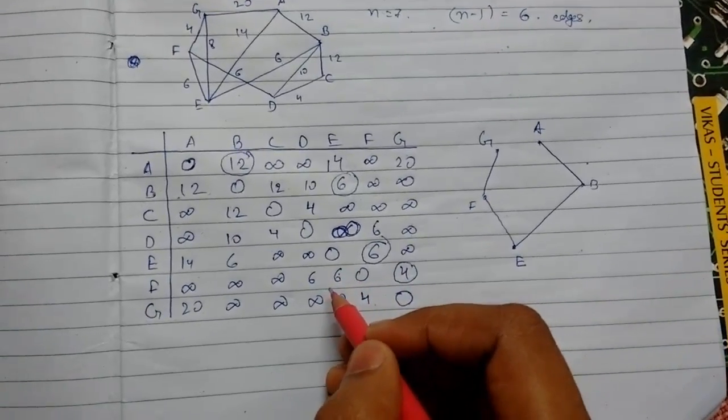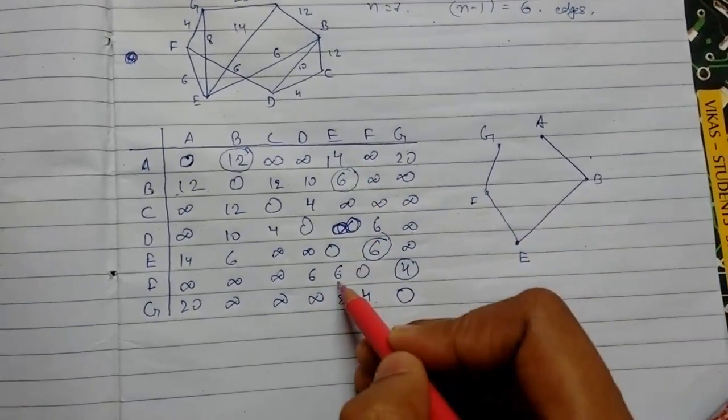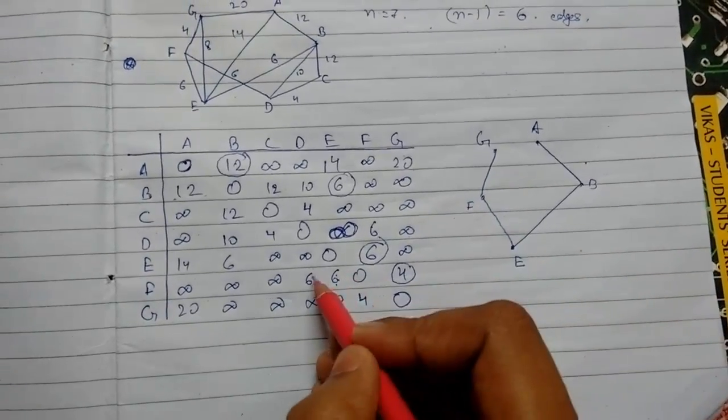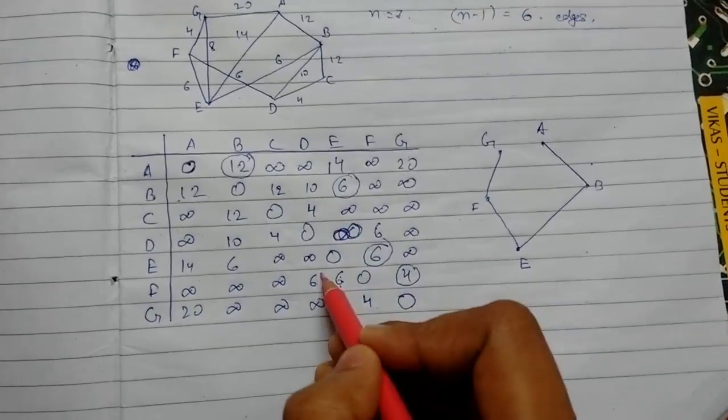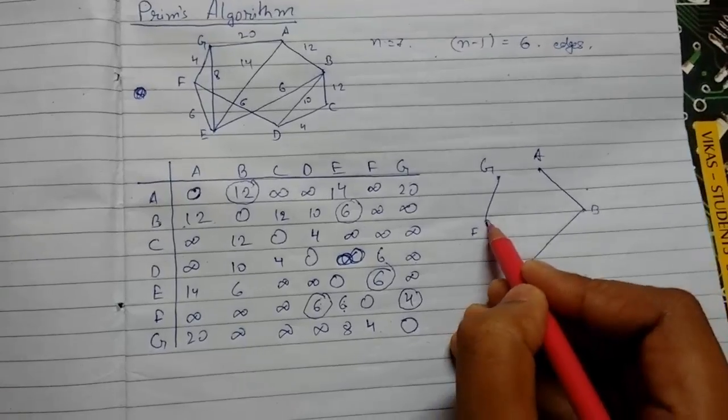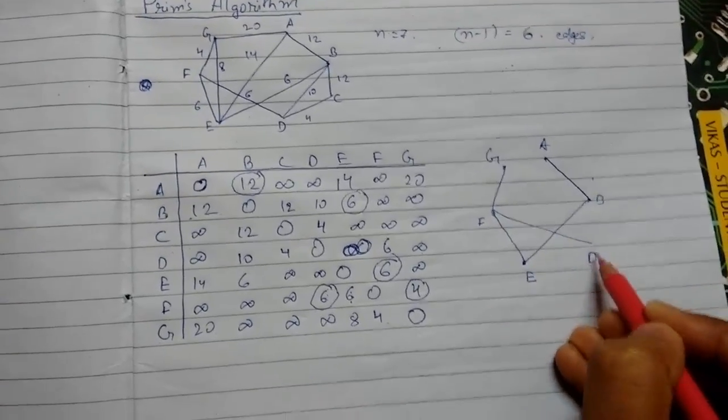Now see if there is any minimum or not. If we'll take this, there are two 6 values. If we'll take E it is not possible, we need to take this, that is D, 6. So F to D, something like this.